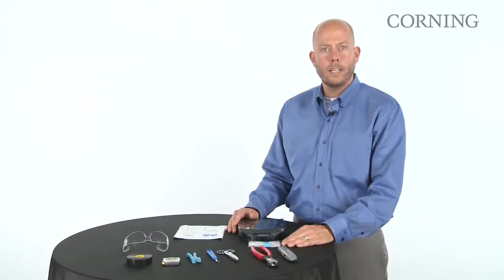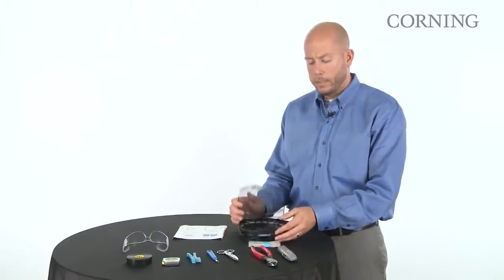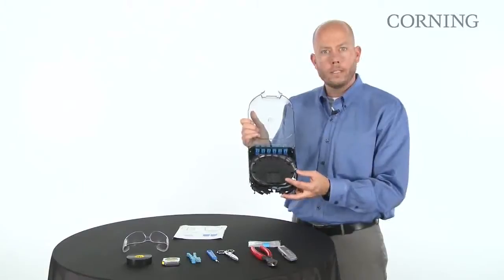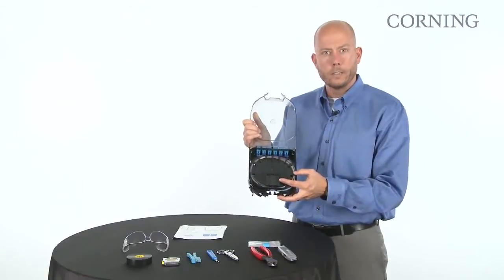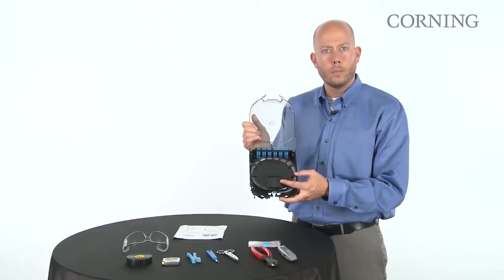Each CCH pigtailed splice cassette will arrive from the factory with the heat shrink organizer in the correct orientation. The orientation of the heat shrink organizer will be dependent on the part number.